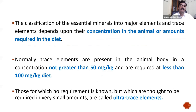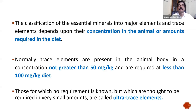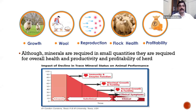The classification of essential minerals into major elements and trace elements depends on their concentration in the animal and the quantity required in the diet. Trace elements are required at less than 50 milligrams up to 100 milligrams per kg of diet. If the requirement is more than 100 milligrams, those are classified as major elements and expressed as a percentage of the diet. Elements with no known requirement but thought to be needed in very small amounts are called ultra trace elements. Minerals are needed in very small quantities — one to two percent of the diet — but are required for overall health, productivity, and profitability of the herd.